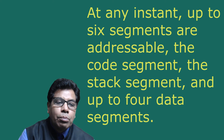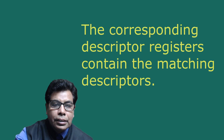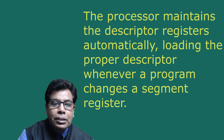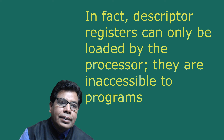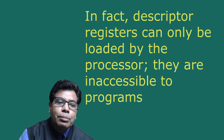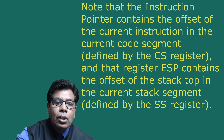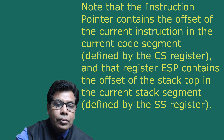The on-chip descriptors enable the great majority of logical addresses to be translated without time-consuming memory references. At any instant, up to six segments are addressable: the code segment, the stack segment, and up to four data segments. The CS, SS, DS, ES, FS, and GS segment registers contain the selectors for these segments, and the corresponding descriptor registers contain the matching descriptors. If necessary, a program can make a new segment addressable by loading the new segment's selector into a segment register. The processor maintains the descriptor registers automatically, loading the proper descriptor whenever a program changes a segment register. Descriptor registers can only be loaded by the processor — they are inaccessible to programs. Note that the instruction pointer contains the offset of the current instruction in the current code segment defined by the CS register, and register ESP contains the offset of the stack top in the current stack segment defined by the SS register.